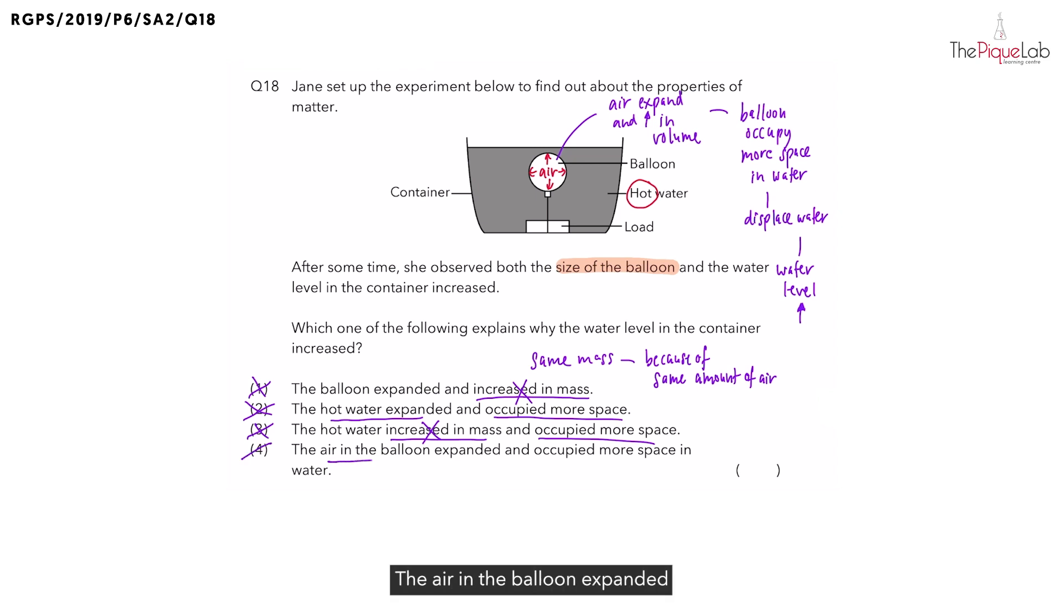Option 4. The air in the balloon expanded and occupied more space in the water. Now, let's check with our thought process earlier. The air gained heat from the hot water to expand and increase in volume, causing the balloon to occupy more space in water, displacing the water, and increasing the water level in the container. So, this is our correct answer. Option 4.